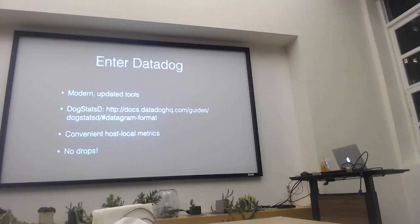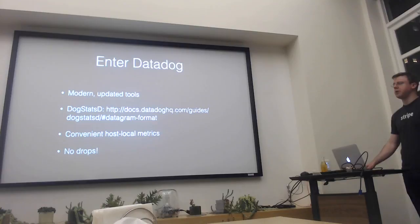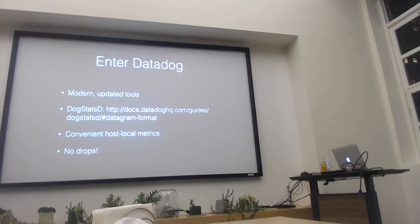How many of you are familiar with Brubeck? Brubeck is a C-based implementation of StatsD that's way faster. StatsD is written in Node — it's JavaScript — which is great until it gets to really high levels of incoming packets, and then it just sort of kind of falls off. The folks at GitHub wrote Brubeck, which is a C implementation of StatsD.